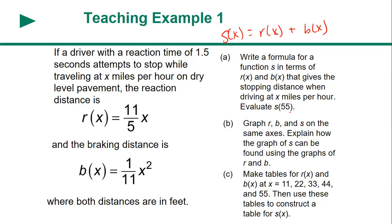Your stopping equals your reacting and your braking. So for this problem, your stopping equals R(X) plus B(X), because both of these things have to happen in order for you to stop. If I don't react, am I going to know to brake? Nope. So what it's asking is to evaluate S(55) — meaning if I'm driving 55 miles per hour, what is R(55) plus B(55)? But if it's trying to build a formula and ask me over and over, do I want to keep plugging into two separate equations, or just create one?